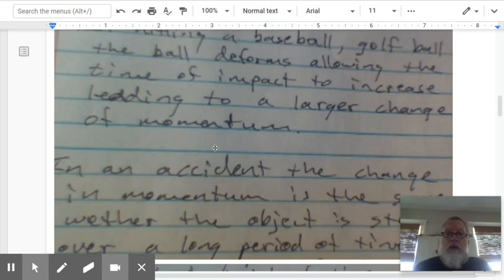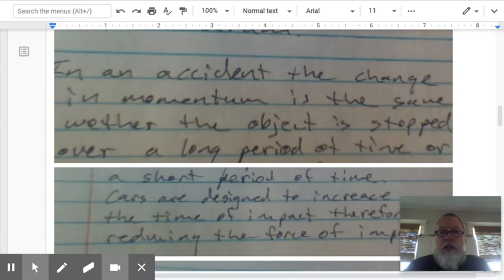Now, in an accident, the change in momentum is the same whether the object is stopped over a long period of time or a short period of time. This is assuming collision leads to a stop, so we're not talking about bouncing. That's a little bit different.